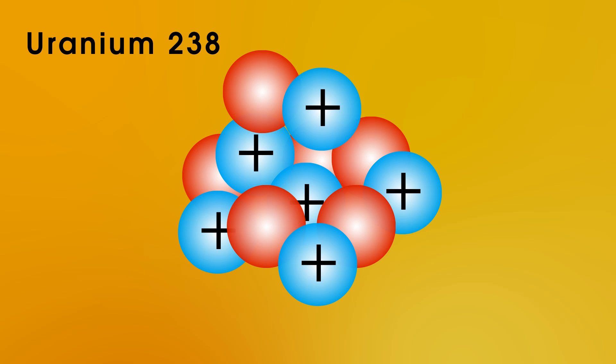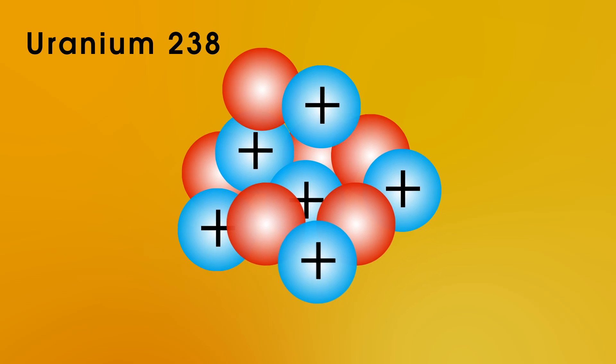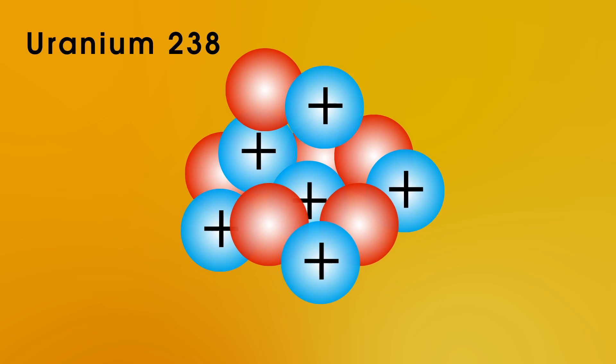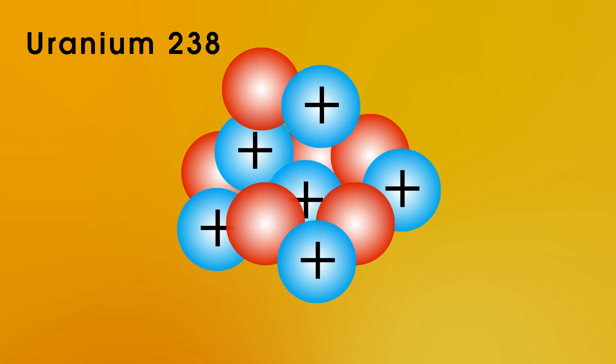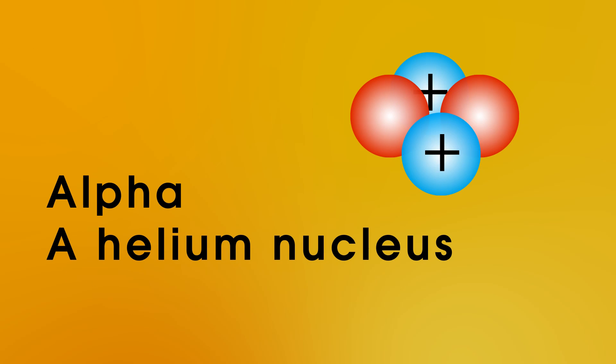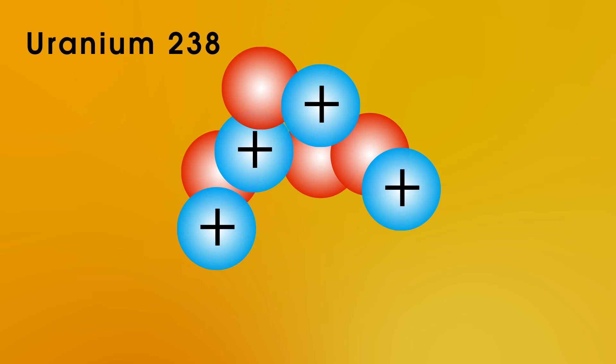This is, again, an unstable nucleus, but this time, it doesn't undergo beta decay. What it can do, it can actually eject two protons and two neutrons from the nucleus. And two protons and two neutrons is essentially exactly the same as the nucleus of a helium atom, and we call this an alpha particle. Also, when it does this, it emits a burst of electromagnetic radiation, or gamma radiation.